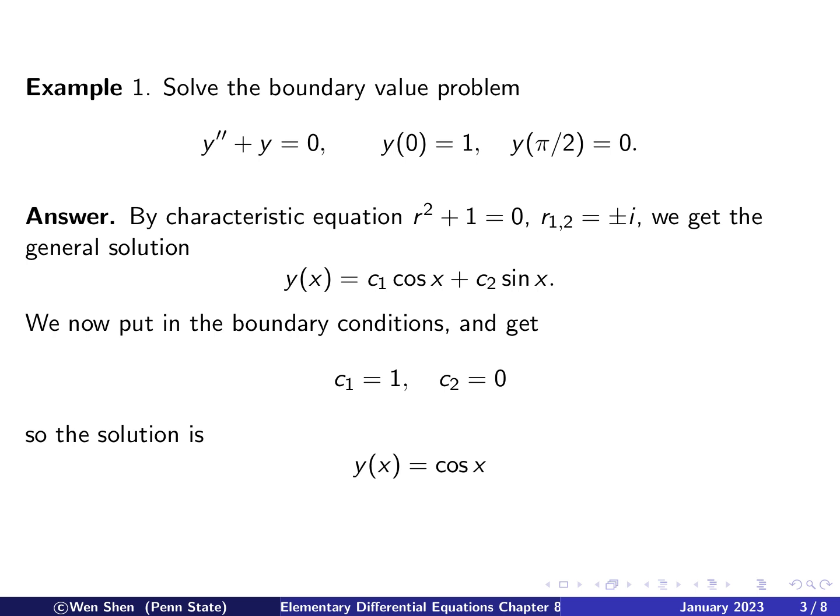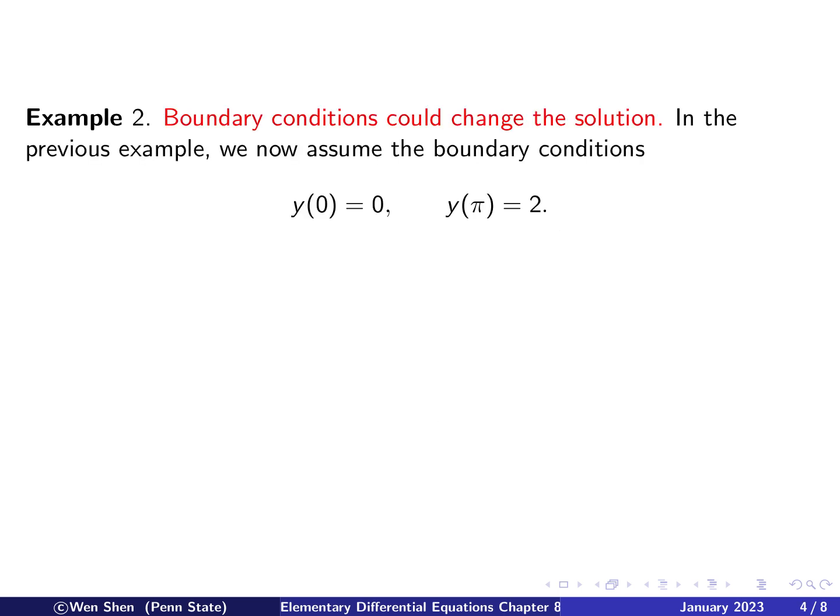In this example, the two conditions helped us find exactly one set of constants c1 and c2. Now let's take another example with the same equation but different boundary conditions: y(0) = 0 and y(π) = 2.